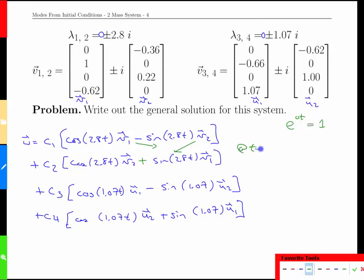So if we want to only have c1's and c2's and no c3's and c4's, remember that at time 0, that's our initial condition, all we're going to have is c1 times v1 plus c2 times v2. Because the sine of 0 is 0, all we get are the cosine terms.